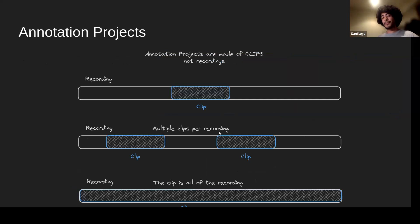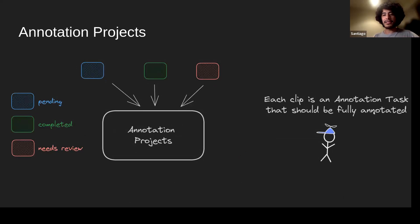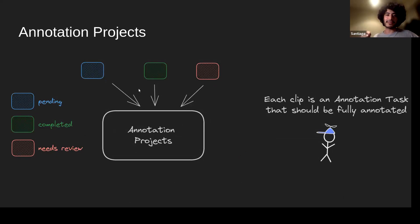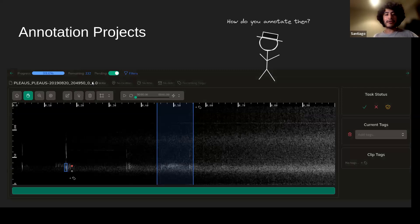Annotation projects are not made of recordings but of audio clips — sections or subsections of recordings. You can add multiple clips per recording: for example, all one-second clips of a recording, or use the whole recording as a single clip, giving you freedom about the unit of annotation. Each clip is converted into an annotation task that needs to be fully reviewed by a human and made to comply with annotation instructions. You can track clip status: completed, in review, or pending.